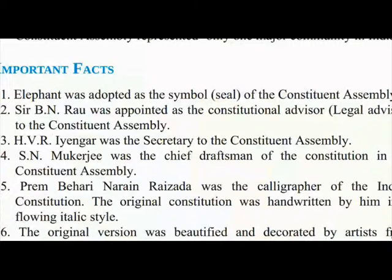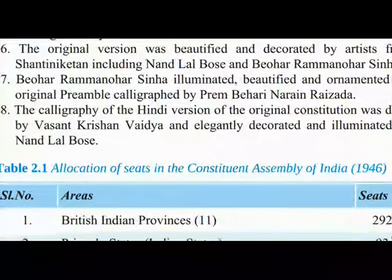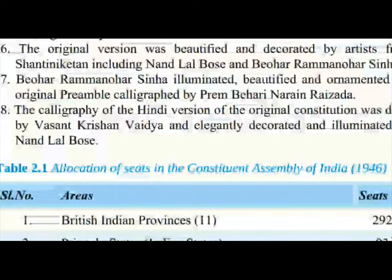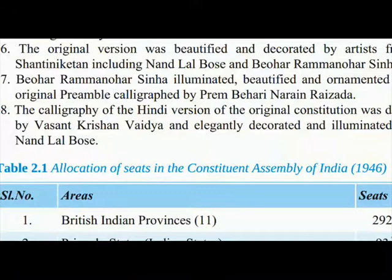Important Facts: (1) Elephant was adopted as the symbol/seal of the Constituent Assembly. (2) B.N. Rau was appointed as the constitutional advisor/legal advisor to the Constituent Assembly. (3) H.V.R. Iyengar was the secretary to the Constituent Assembly. (4) S.N. Mukherjee was the chief draftsman of the constitution. (5) Prem Behari Narain Raizada was the calligrapher of the Indian constitution — the original constitution was handwritten by him in a flowing italic style. (6) The original version was beautified and decorated by artists from Shantiniketan including Nandlal Bose and Beohar Rammanohar Sinha. (7) Beohar Rammanohar Sinha illuminated and ornamented the original preamble calligraphed by Prem Behari Narain Raizada. (8) The calligraphy of the Hindi version was done by Vasant Krishna Vaidya and elegantly decorated and illuminated by Nandlal Bose.